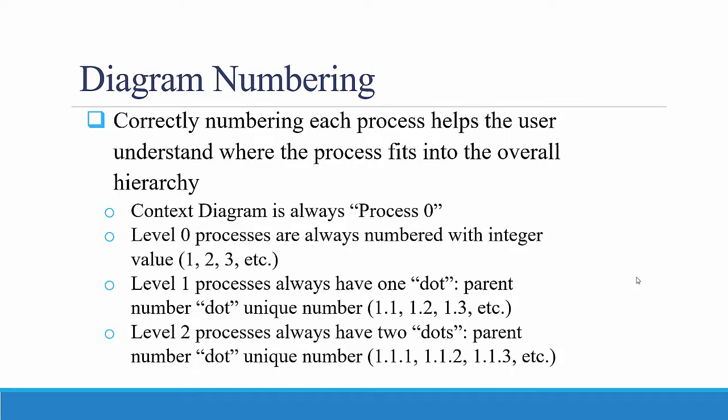Context diagram is process 0, the next level down is level 0 processes, and those processes on the level 0 diagram are numbered 1, 2, 3, 4, etc.